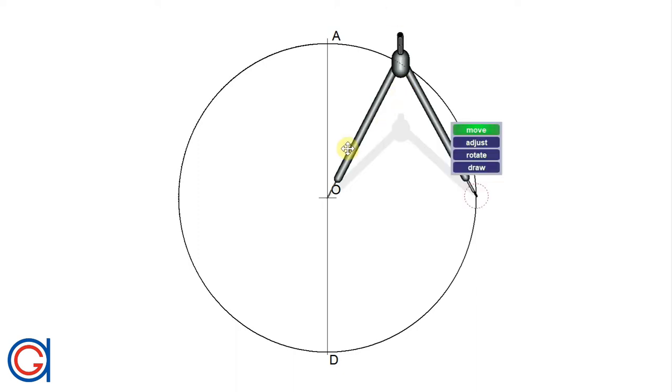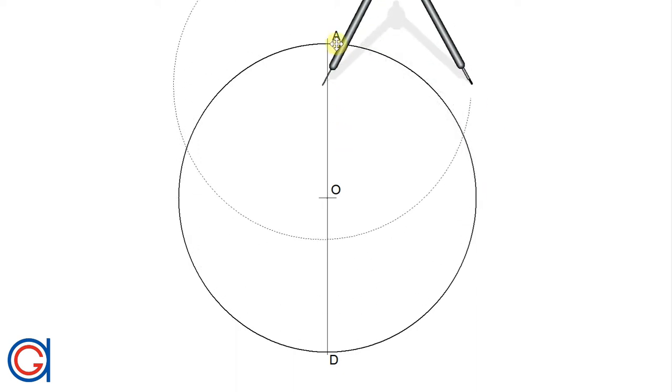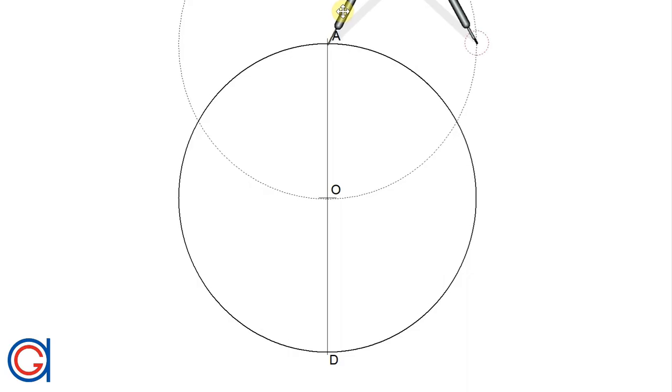The next step, with our compass set to the length of the radius of the circle and centered on point A, we're going to scribe an arc until it cuts the circumference at two points, as can be seen here.